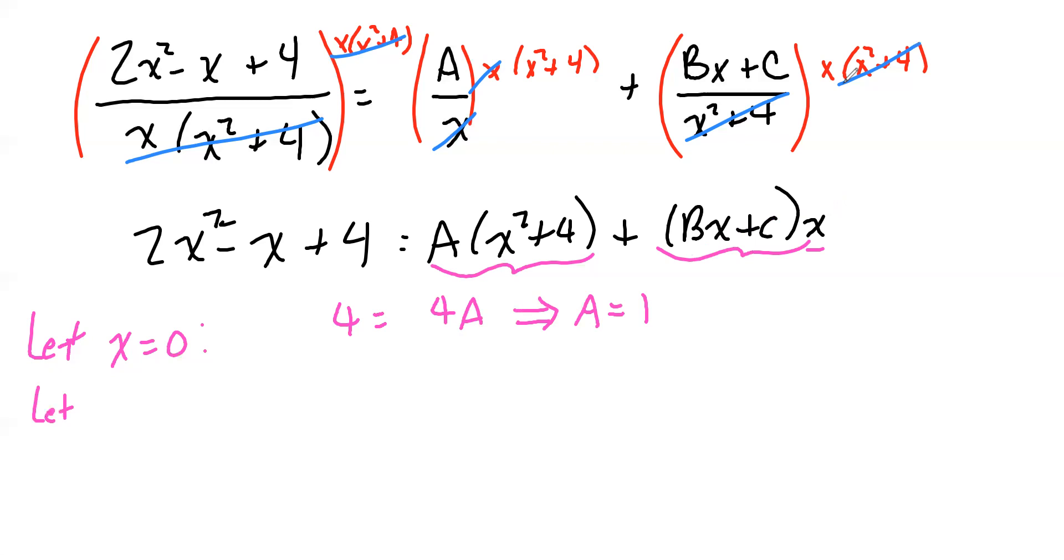Let's try something simple like letting x equal to 1. If we let x equal to 1 on the left side of the equation right here, we get 2 - 1 + 4, which is 5.